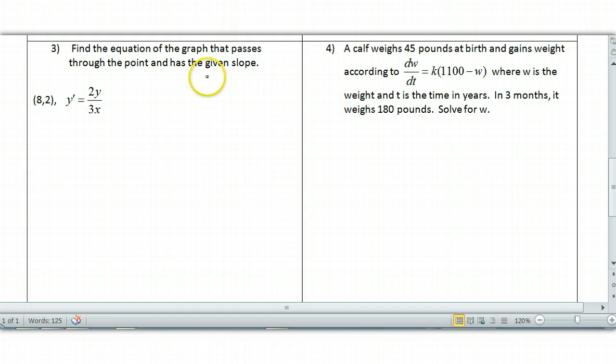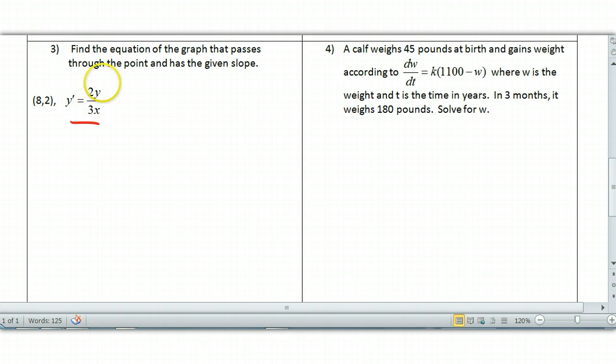This one, find the equation of the graph that passes through the point and has the given slope. Here's my slope. I want the equation of the graph. In a general solution type situation, I have many, many graphs. However, I want to look at the specific solution—finding the particular solution for this differential equation. If I set this up, I get dy/dx is equal to 2y over 3x. Get your x's on one side, your y's on the other. This would be 1 over y dy is equal to 2 thirds, or 2 over 3x, dx. So I separated my variables. Now I can integrate.